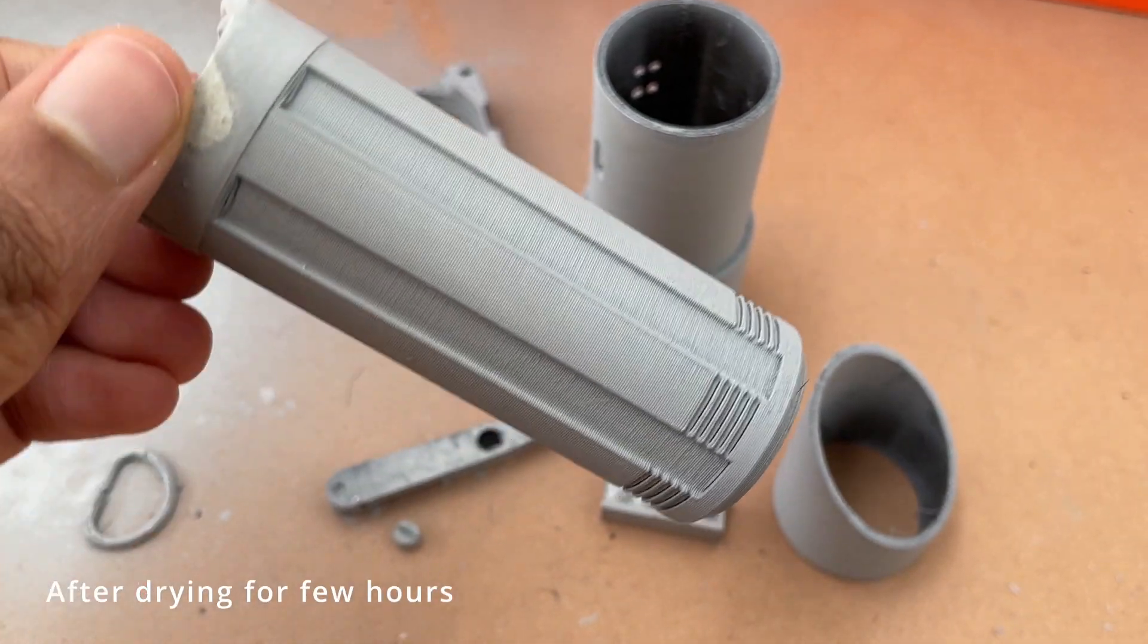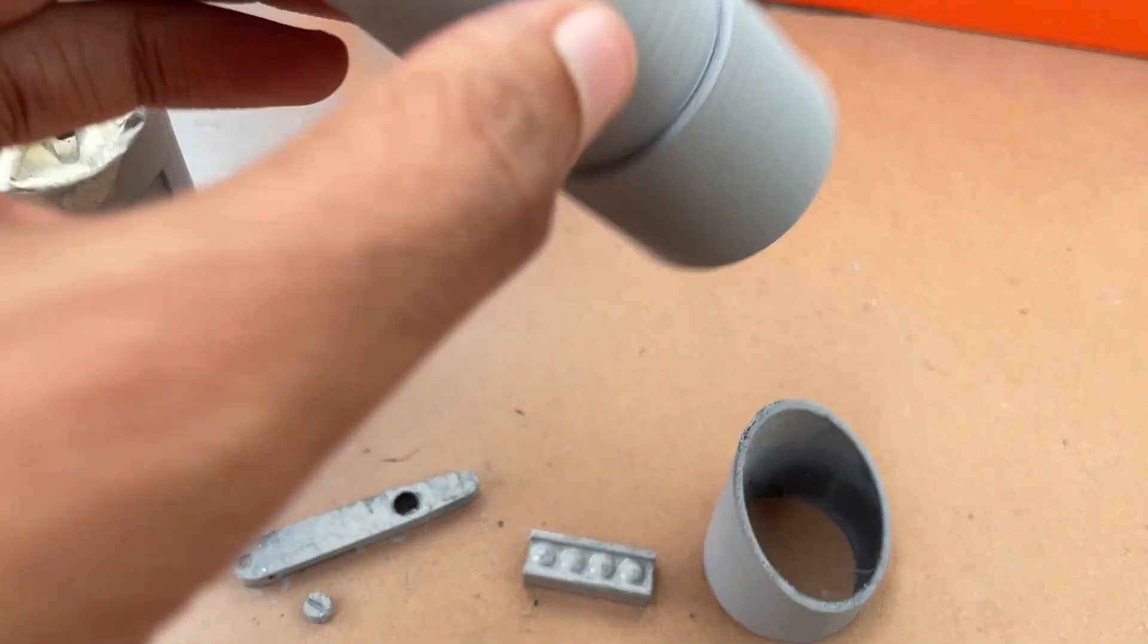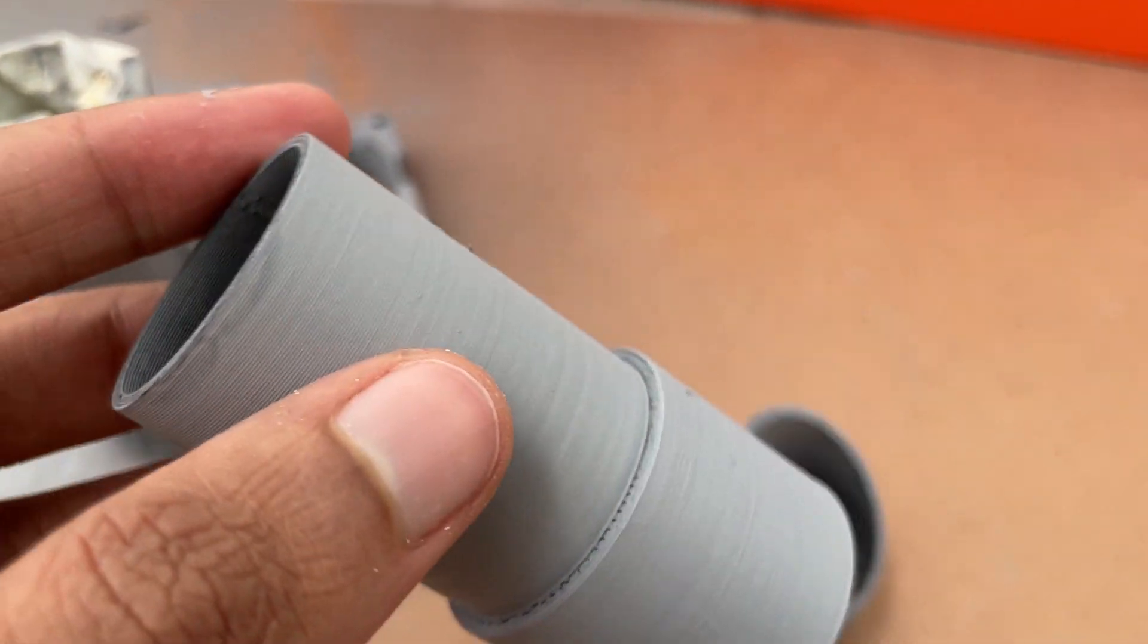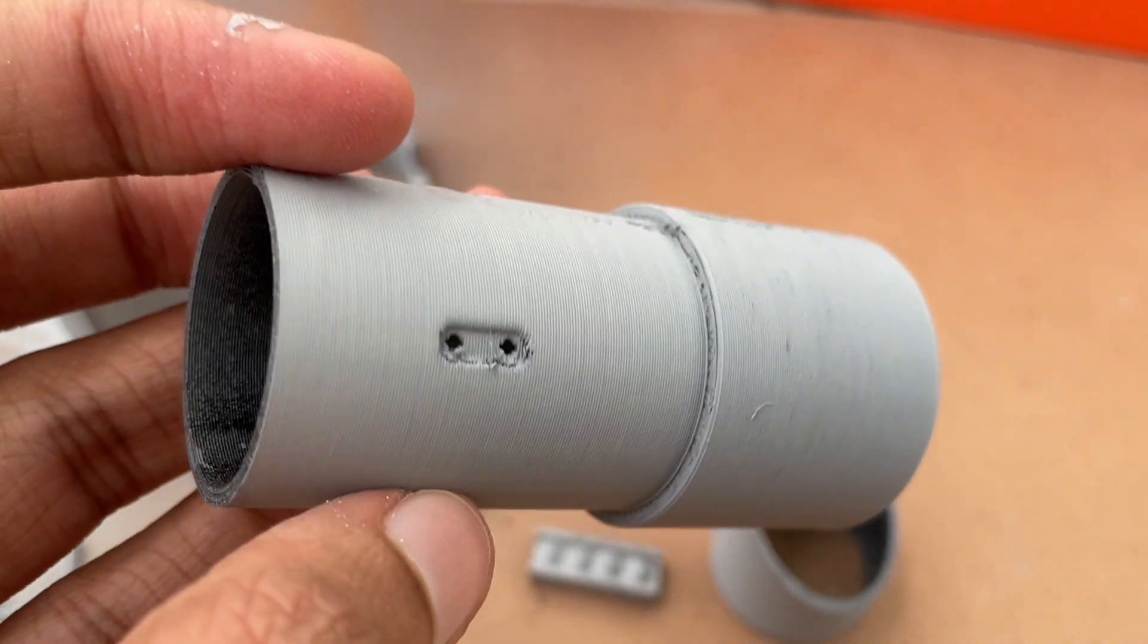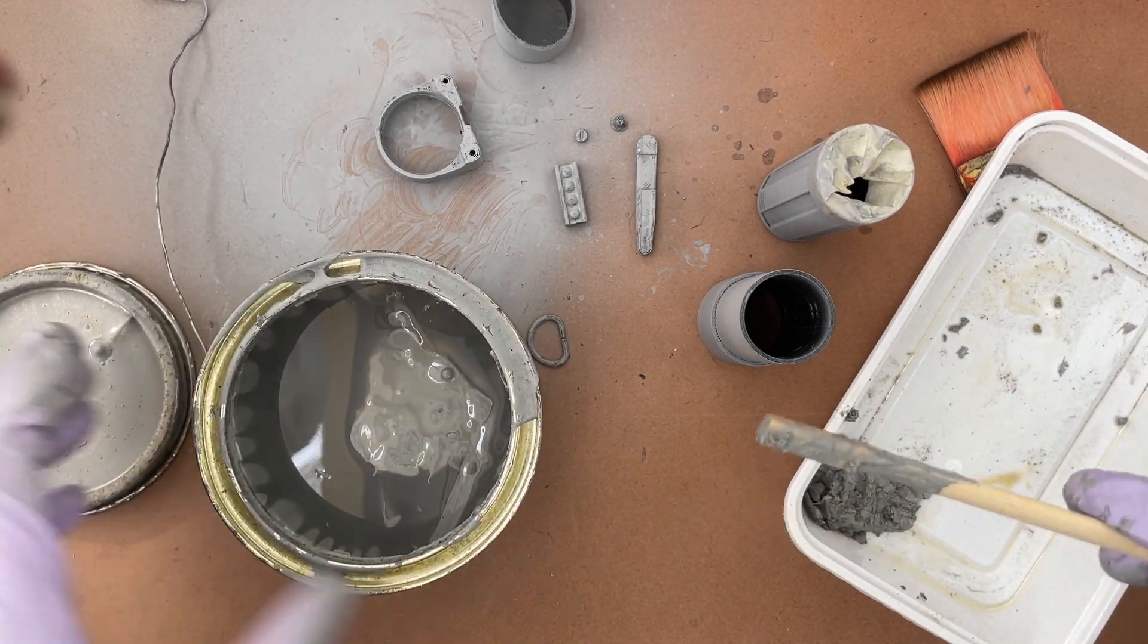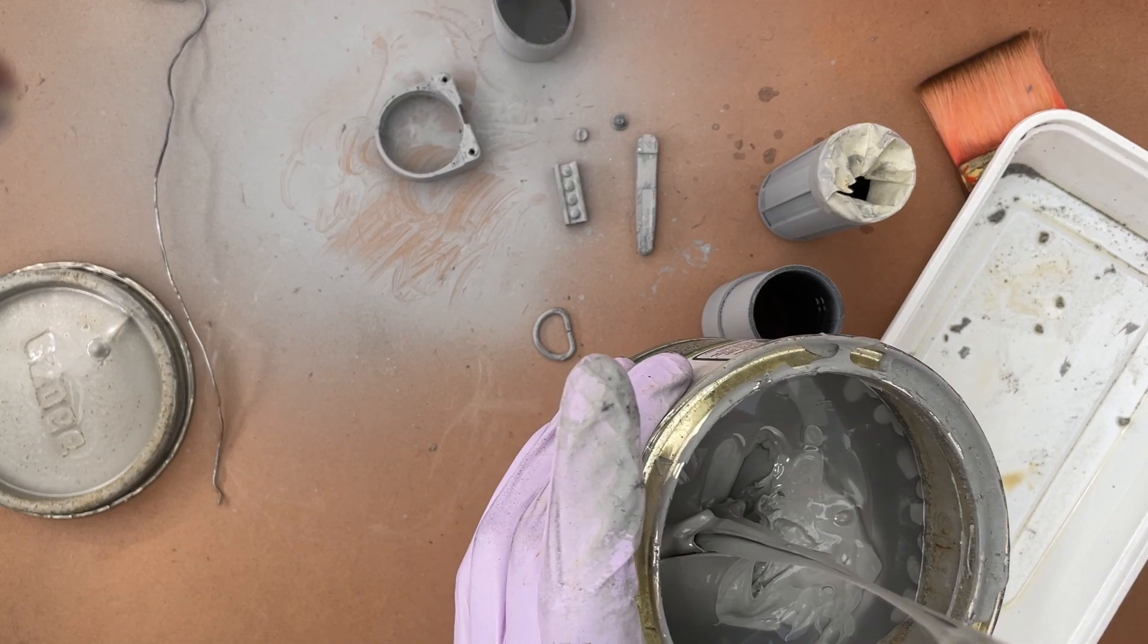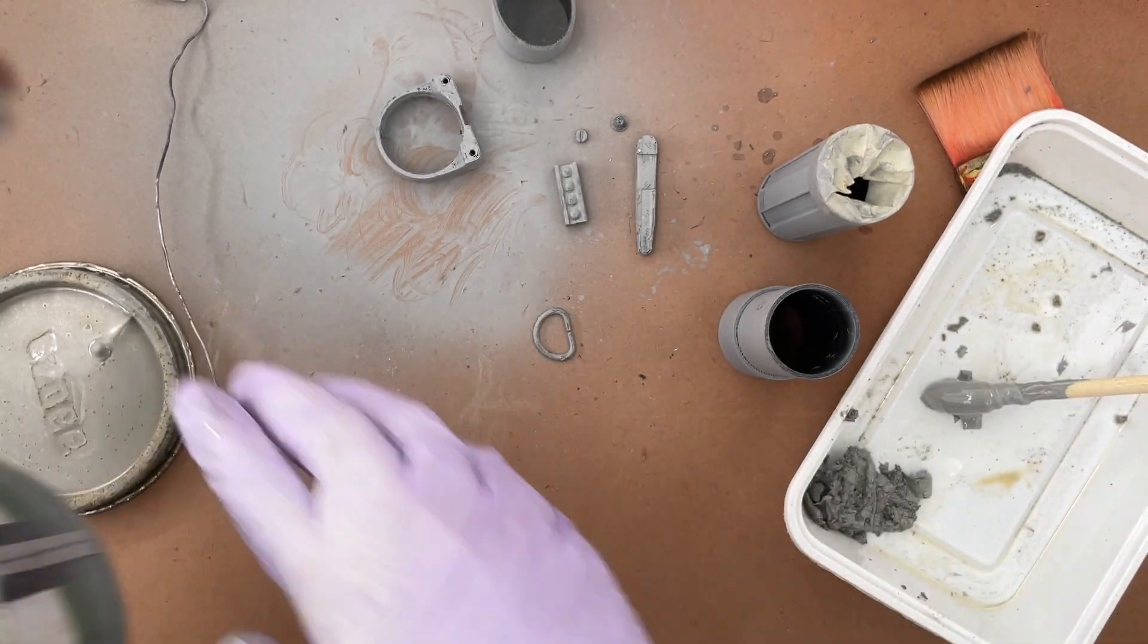So this is what the parts look like after a couple of hours of drying. You can still sort of see the layer lines pretty clearly, so you probably want to use a putty filler. I'm just gonna go ahead and use this putty filler. This stuff really is horrible to smell, so you want to be quite quick with working with it, and it dries out very fast.